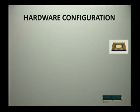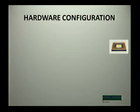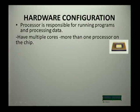Now for hardware configuration, we're going to first look at your processor, which is the CPU. The processor is responsible for running programs and processing data. If you have a CPU that has multiple cores, it means that it has more than one processor chip.